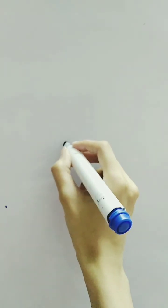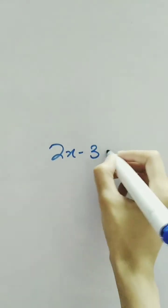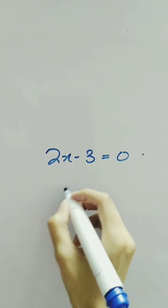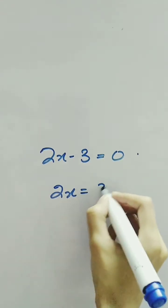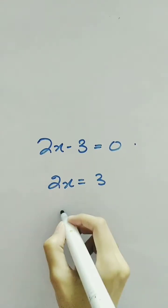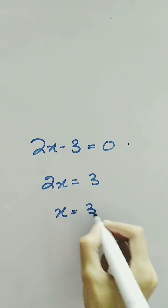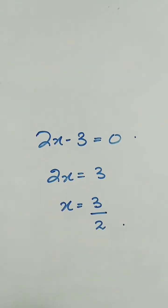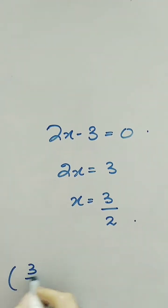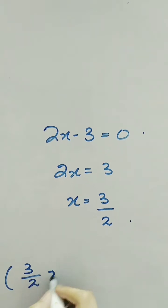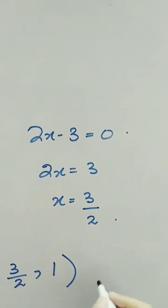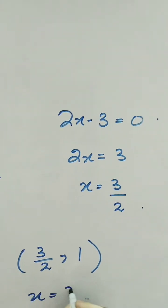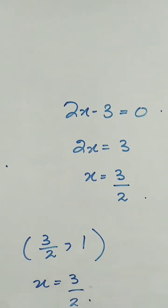With this expression, setting 2x - 3 = 0, we will have 2x = 3, or the axis of symmetry comes out as x = 3/2. So we have vertex (3/2, 1) and axis of symmetry x = 3/2.